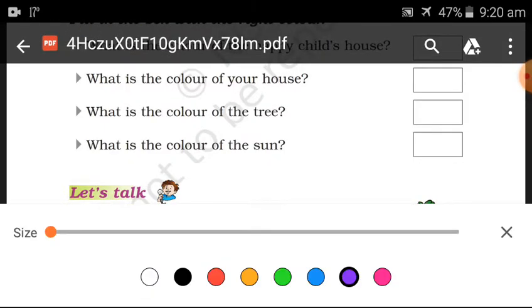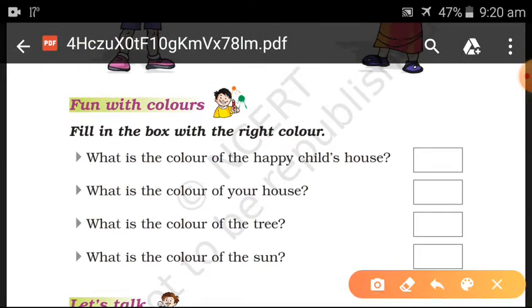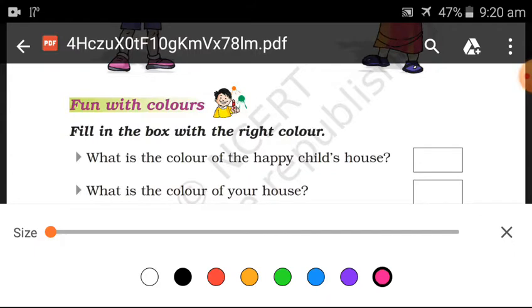We will write what is the color of the happy child's house. Happy child's color house was red. So we will write here, red. Red color.